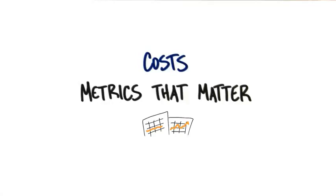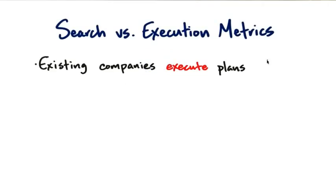One of the interesting things about cost is that in the old days, costs and revenue — the minute you started your company, your investors said we know how to track all this. We want you to fill out an income statement, a balance sheet, and cash flow. And we want you to do accounting from day one, which gives us visibility and forecasts. The problem is these were execution metrics.